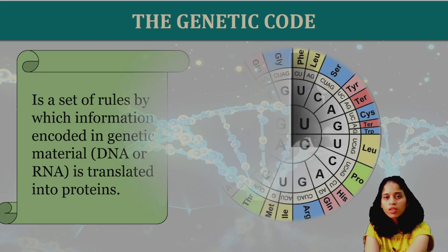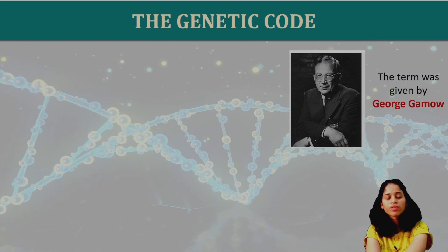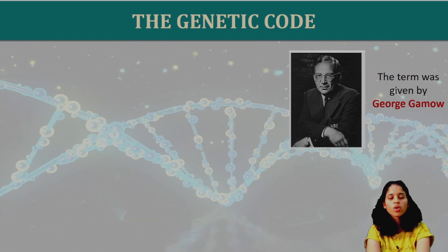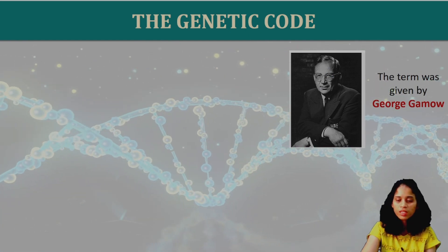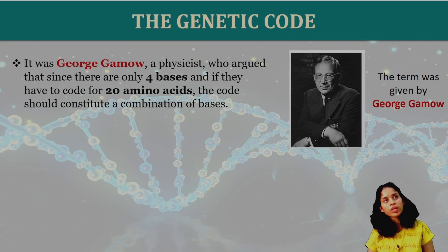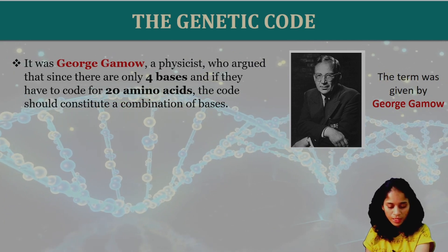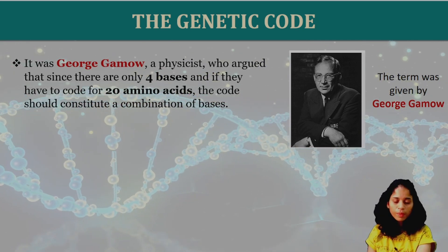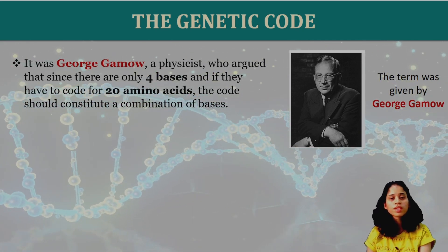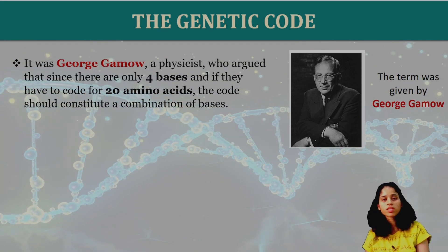When we discovered this concept of genetic code, a scientist — a physicist — proposed it. There are 4 bases in our body and there are 20 different amino acids in our body.